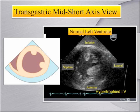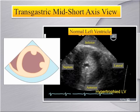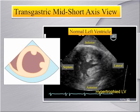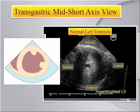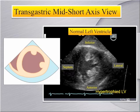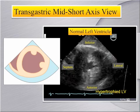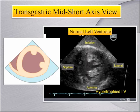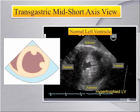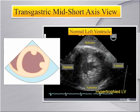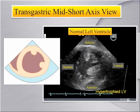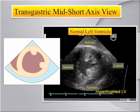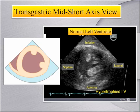Advancing the probe into the stomach and antiflexing gives rise to a series of transgastric views. The basal, mid, and apical levels are all used in assessing wall motion of all cardinal walls of the left ventricle. The mid-papillary view is essential for calculating shortening fraction, fractional area of change, and ejection fraction. LV systolic and diastolic volumes are measured here, and visual estimates of ejection fraction are also performed here.